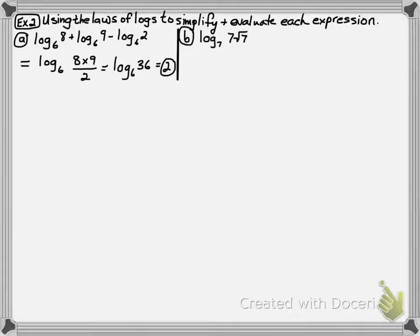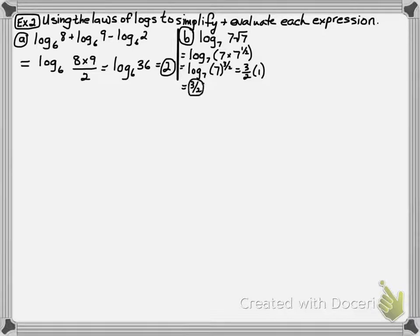In B, log base 7 of 7 root 7. We can say that it's 7 to the power of 1 times 7 to the power of a half, so that would be 7 to the power of 3 halves. Therefore, we can bring the 3 halves down and say it's 3 halves times log base 7 of 7. And log base 7 of 7 is 1, so 3 halves times 1 is 3 halves.